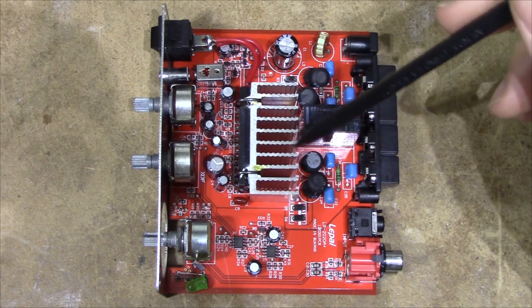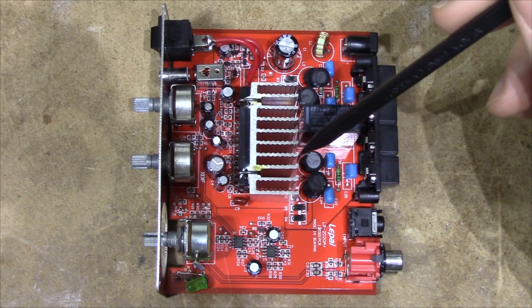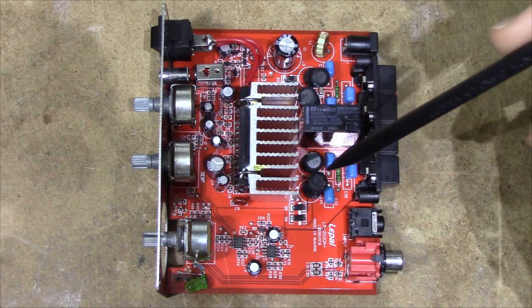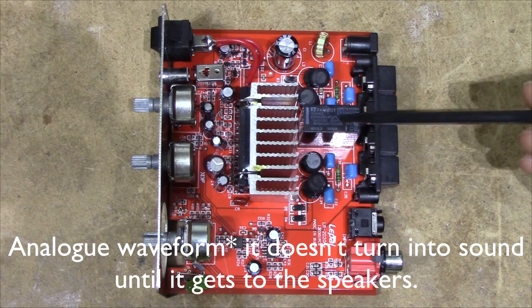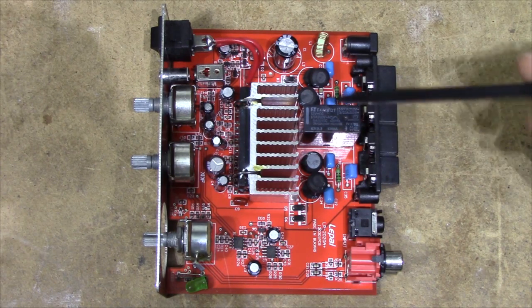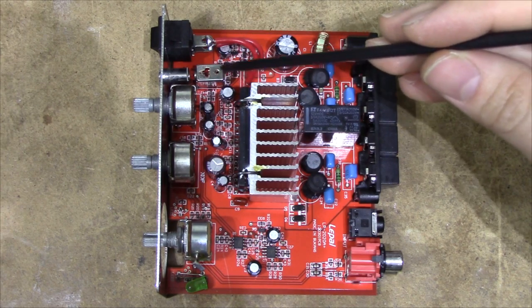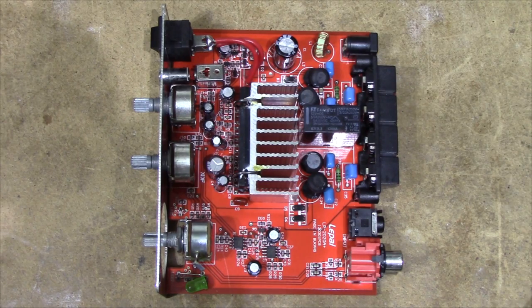On the output, it goes through the pretty much copy-paste from the datasheet output filter. Since this is a class D amplifier, it requires a couple of coils and capacitors to filter out the PWM signal and make a usable analog sound wave. It also goes through this protection relay, which is driven through an under-voltage protection circuit. It turns off at about 9 volts.